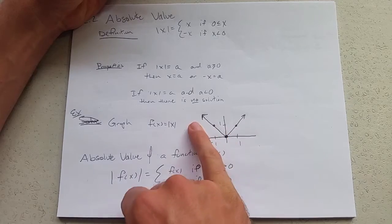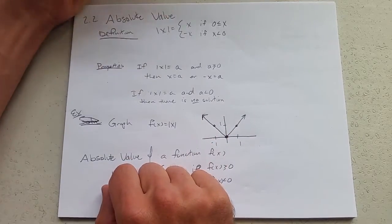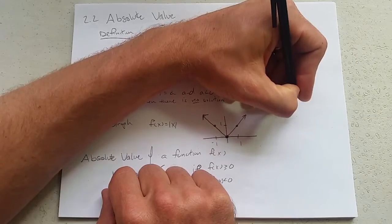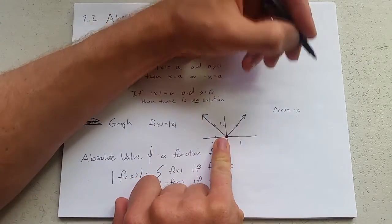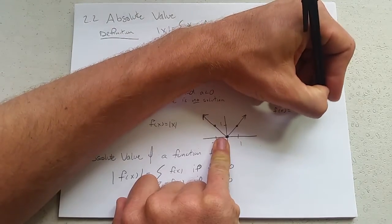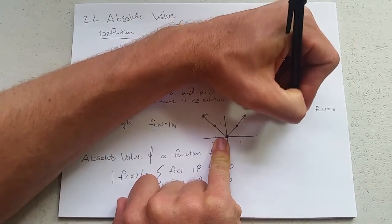Now how did I know they were lines? Well if I look at them individually, here's the negative x part right here. And then the other part f of x was regular x. So what is this?